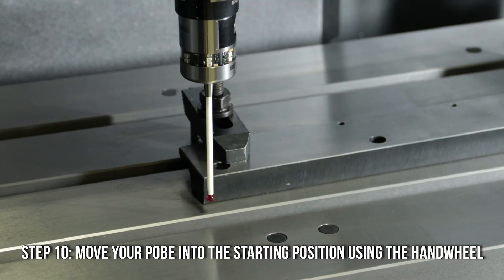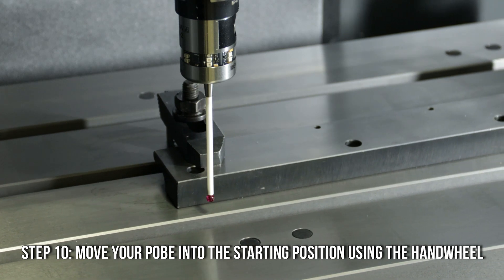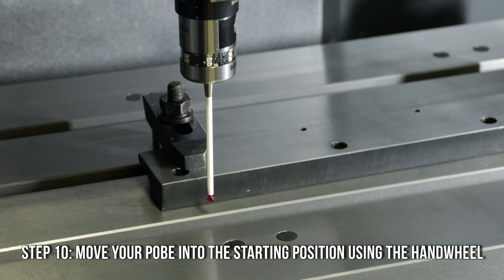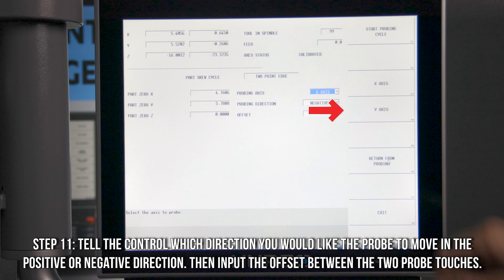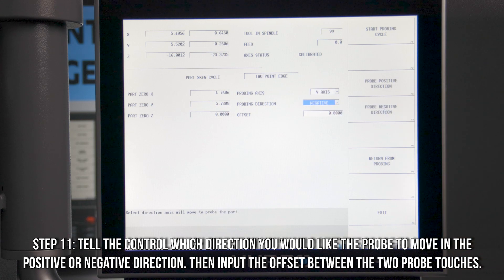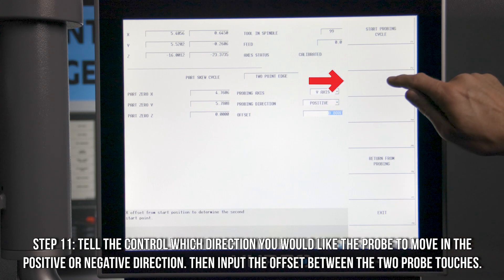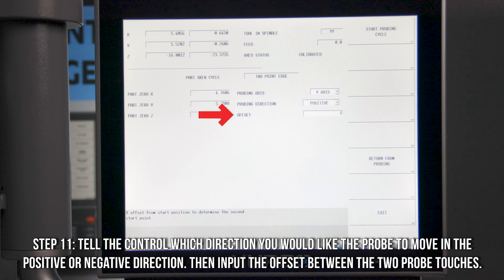Now for this particular cycle, we have to move our probe into the starting position using our hand wheel. You will then tell the control which direction you would like the probe to move, in the positive or negative direction, for that second touch of the contact of the part. Then input the offset between the two probe touches. Press Start Probing Cycle Soft Key and hit Cycle Start.